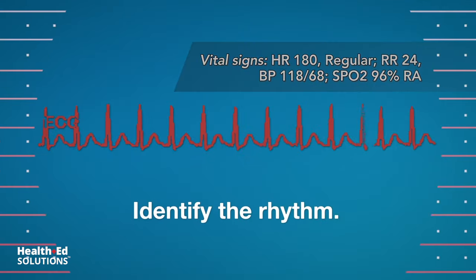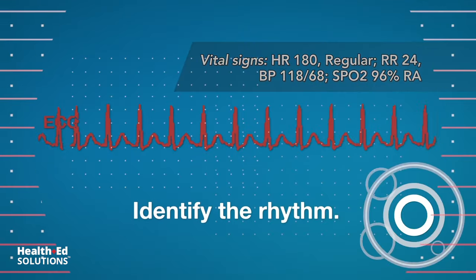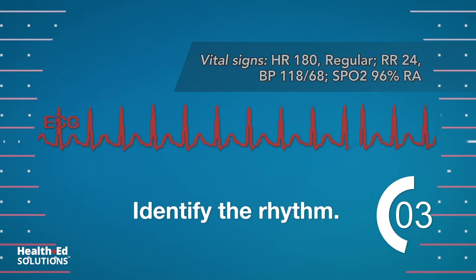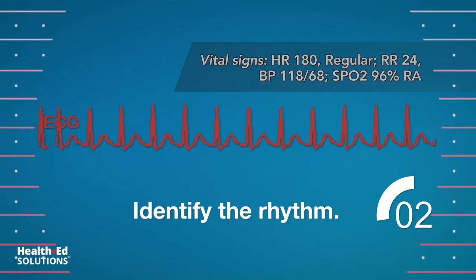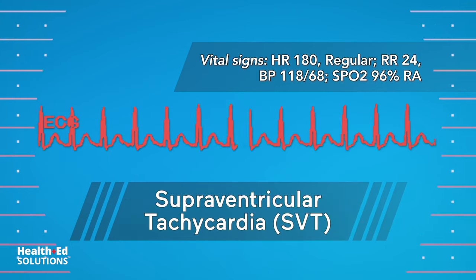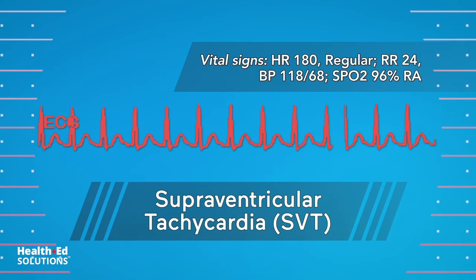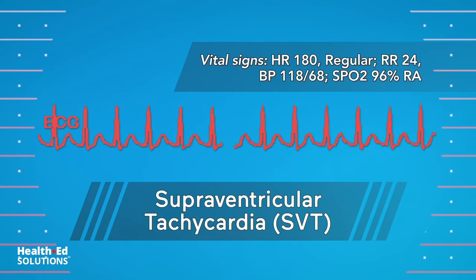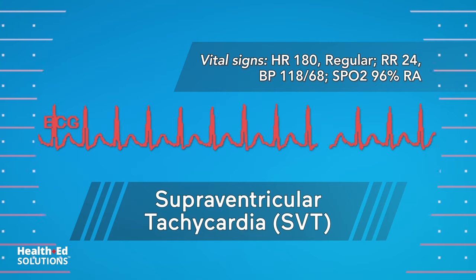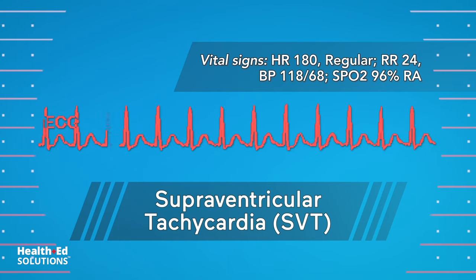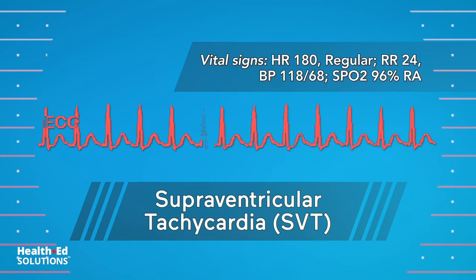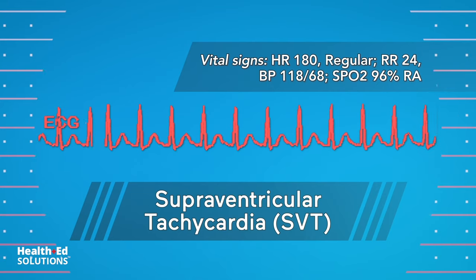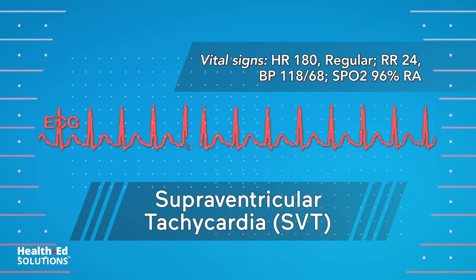Which rhythm is this? This is supraventricular tachycardia, SVT. The rhythm is rapid and regular, and the QRS complexes are narrow, signifying that the rhythm is originating above the AV node.